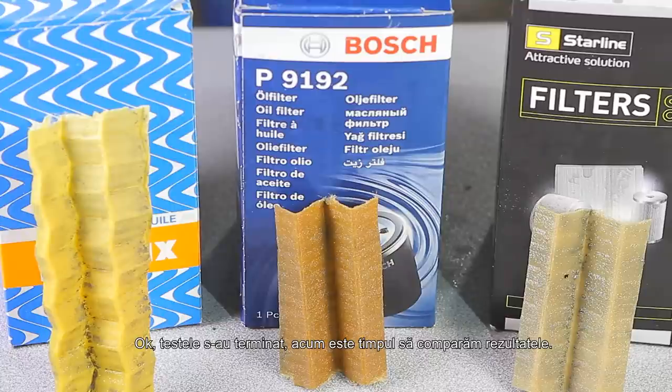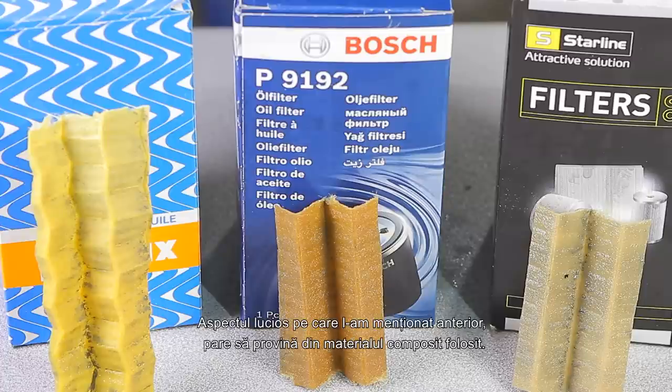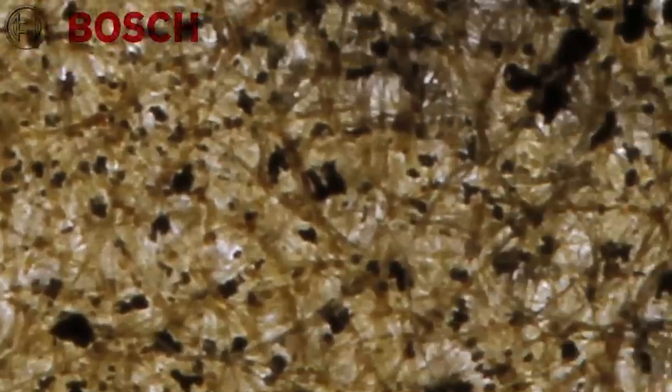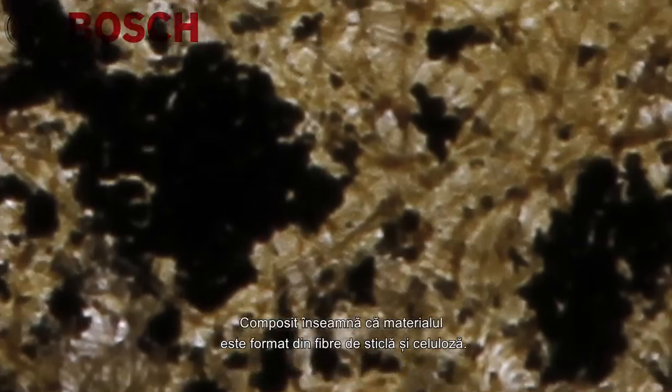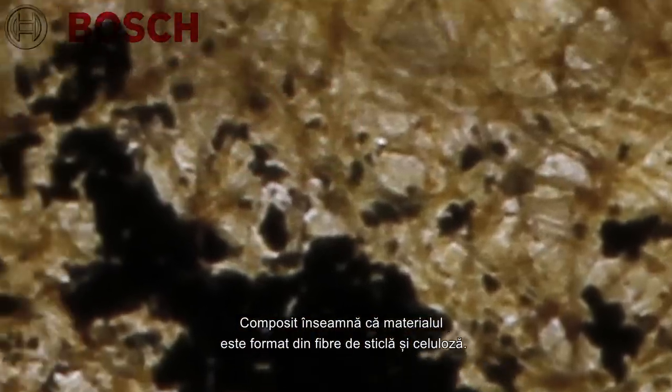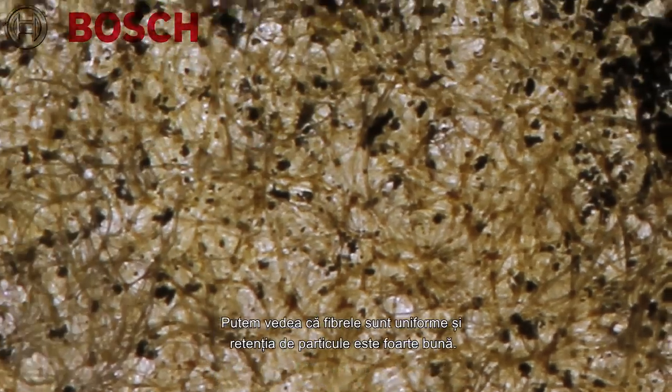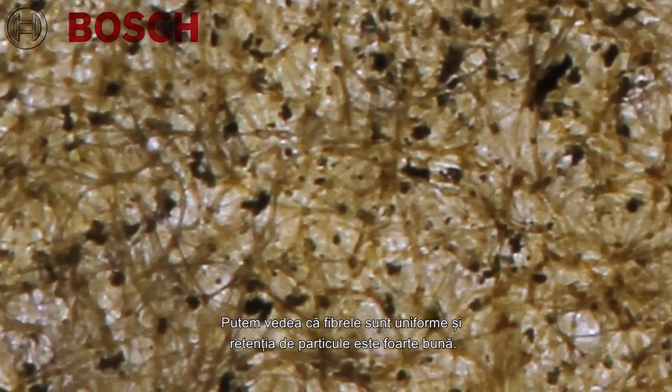So the tests are over, now it's time to compare the results. We'll start with a closer look at the Bosch filter media. The glossy appearance that I've mentioned earlier seems to be from a compound material found in the media. Compound means that the media is made out of fiberglass and cellulose fibers. We can see that the fibers are uniform and particle retention is very good.